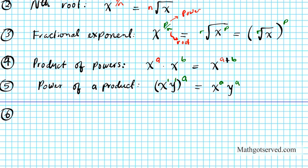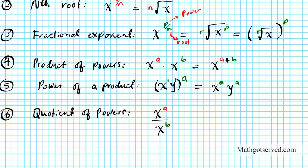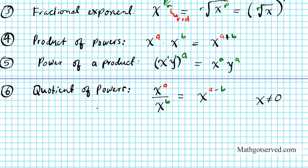Property six is the quotient of powers. So what if we have a quotient of powers where the bases are the same? Let's say we have x to the a divided by x to the b. When you multiply you add the exponents, and when you divide you do the opposite — you subtract. So it's going to be x to the a minus b. Remember, this is applicable only when the bases are the same, and x cannot be zero, or else you have an undefined expression on the denominator.